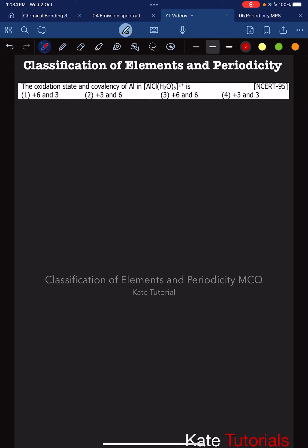Hello everyone, welcome to this question. The question is: the oxidation state and covalency of aluminum in [Al Cl (H2O)5]^2+. Oxidation state is the charge the central atom aluminum will carry. Covalency is the number of covalent or coordinate bonds formed.